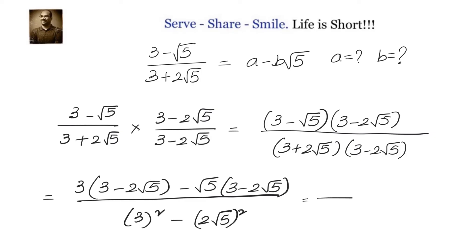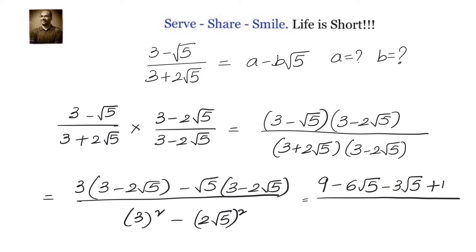Expanding the numerator: 3 into 3 is 9, minus 3 into 2 root 5 is minus 6 root 5, minus root 5 into 3 is minus 3 root 5, and minus root 5 into minus 2 root 5 gives plus 10, since root 5 into root 5 is 5 and 2 into 5 is 10. The denominator becomes 9 minus 4 into 5, giving us 19 minus 9 root 5 divided by minus 11.